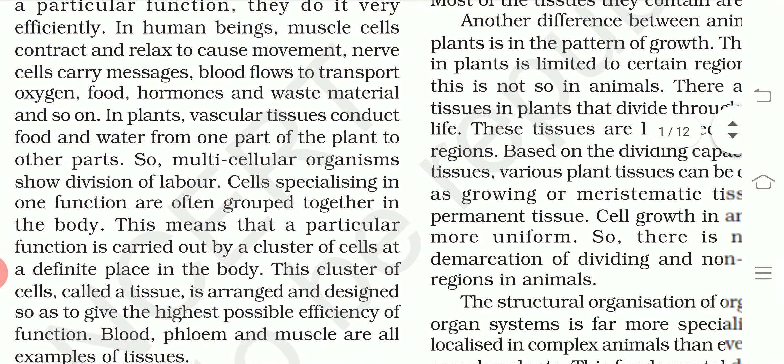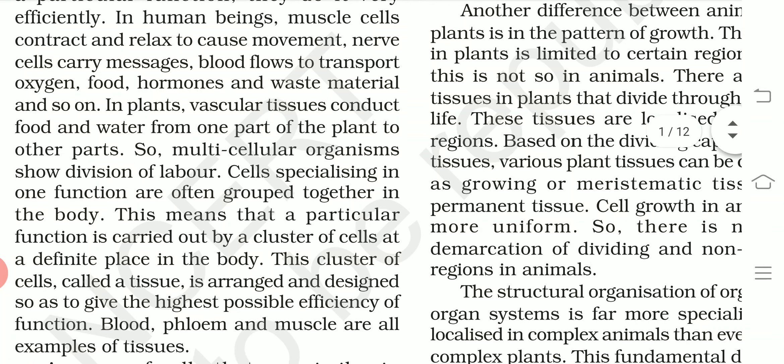Cells specializing in one function are often grouped together in the body. This means that a particular function is carried out by a cluster of cells at a defined place in the body. This cluster of cells is called tissue. A cell is the basic structure of life, and when cells come together in a cluster, that cluster of cells is called tissue.